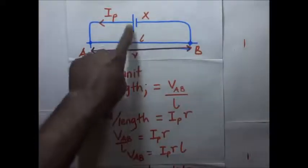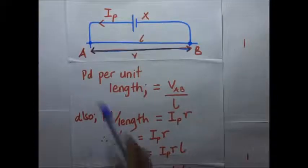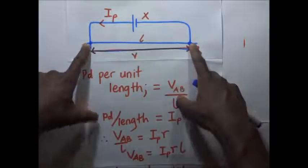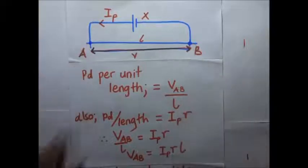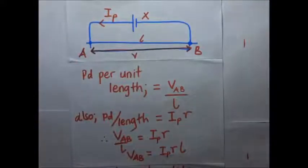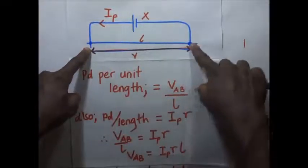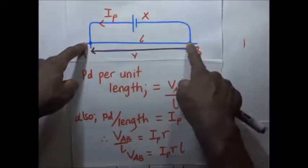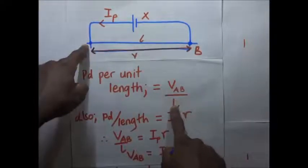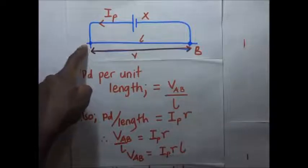In this circuit, we have driver current IP moving through slide wire AB, which has a potential difference V across it. Since the wire has uniform cross-sectional area, it has uniform resistance along its entire length. To get the PD per unit length of the wire, we take the PD across AB and divide it by the length of the wire. So if the length is 100 centimeters, we divide the potential difference by 100 to get an answer in volts per centimeter.